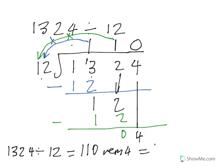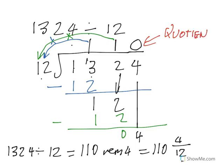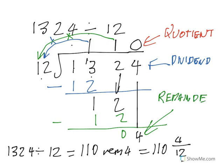We could also write that remainder as 4 over 12, since 12 is what we're dividing into. These numbers have names: the answer on top is called the quotient, the number inside is the dividend, the 4 is the remainder, and the 12 is called the divisor.